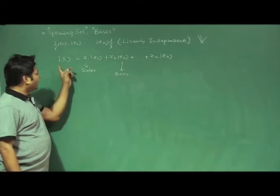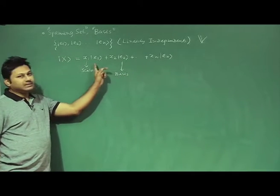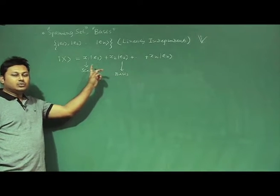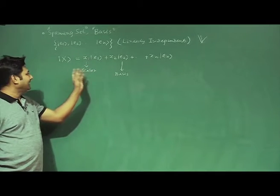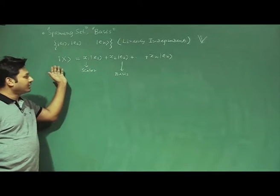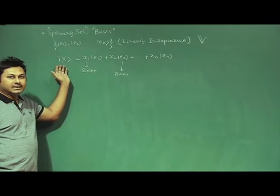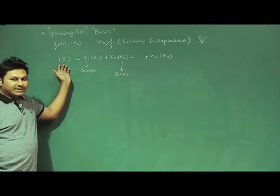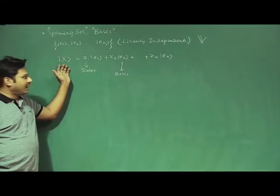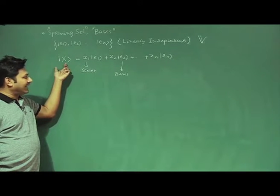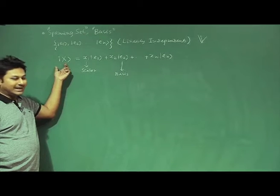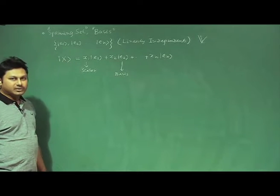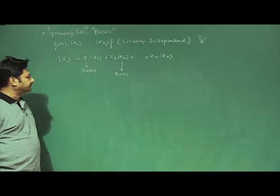Now I will change the notation. This notation has already been introduced to all of you. This is a very important notation in the context of quantum mechanics, and we call it the ket notation or ket notation — sometimes it is also called Dirac notation.